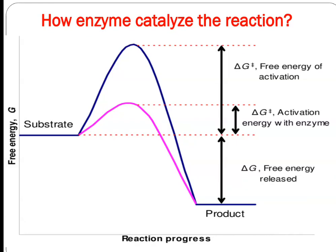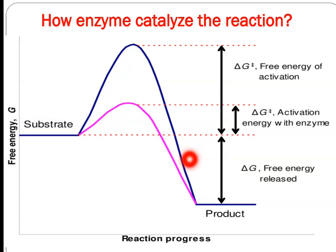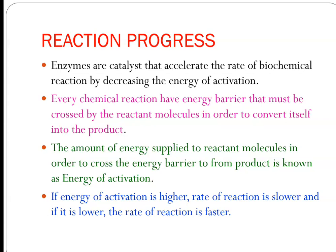How does an enzyme work? It reduces the activation energy. In a simple uncatalyzed reaction, we need a large amount of energy. But in the presence of an enzyme, much less energy is needed. In any metabolic reaction, the enzyme functions to reduce the activation energy required.